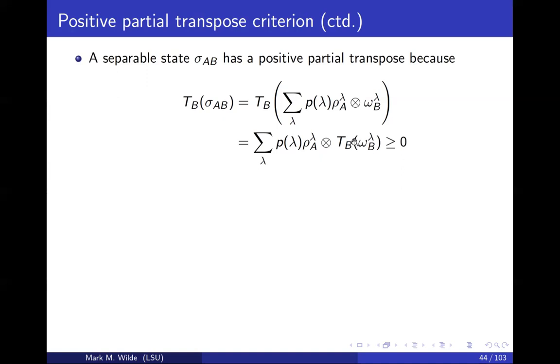We said that the transpose is a positive map, so if omega lambda is positive semi-definite, then the transpose acting on omega lambda will be positive semi-definite as well. If you tensor a positive semi-definite matrix with another positive semi-definite matrix and you take a weighted sum of these where each weight is a non-negative number, then the overall matrix will be positive semi-definite.